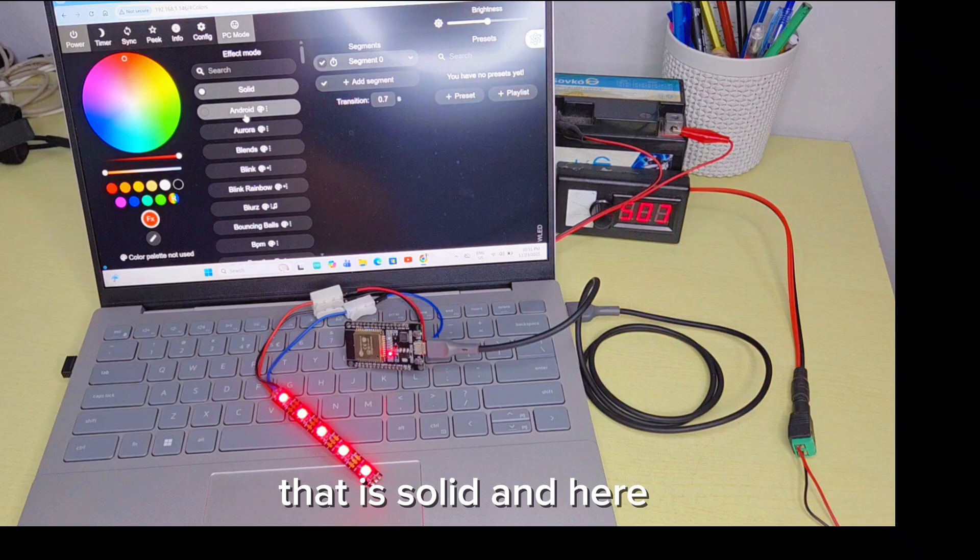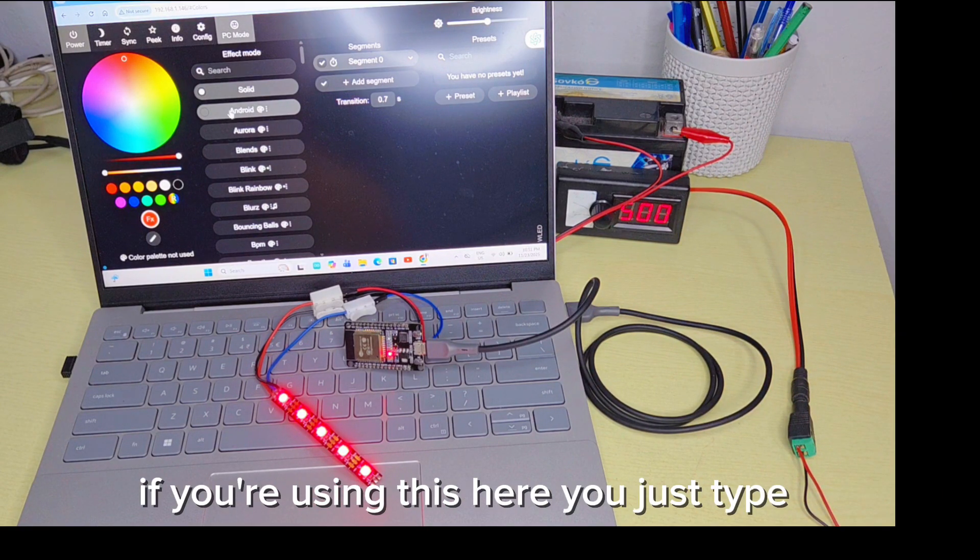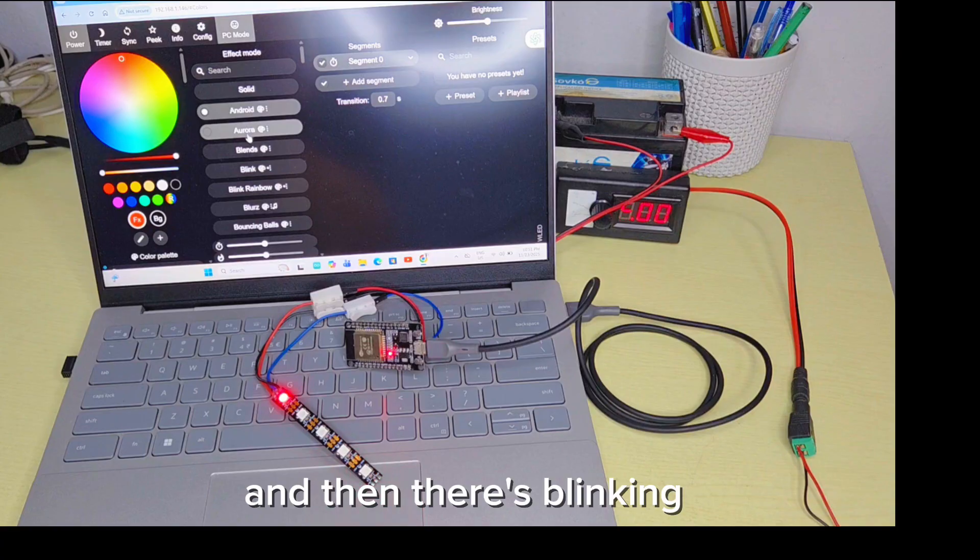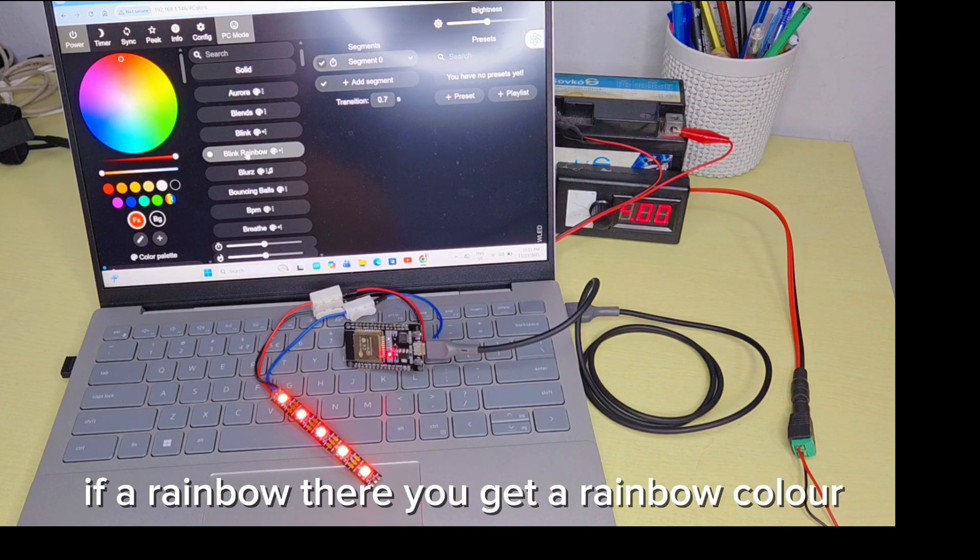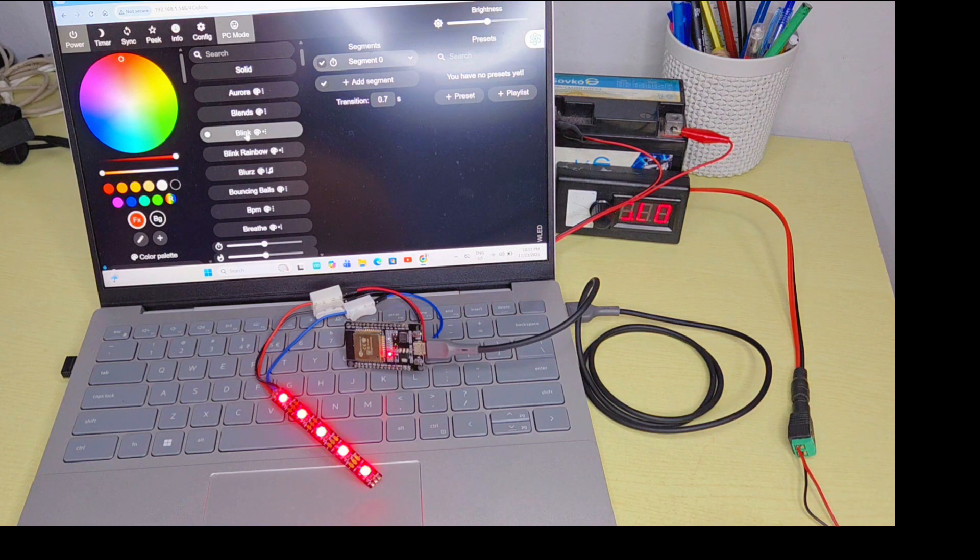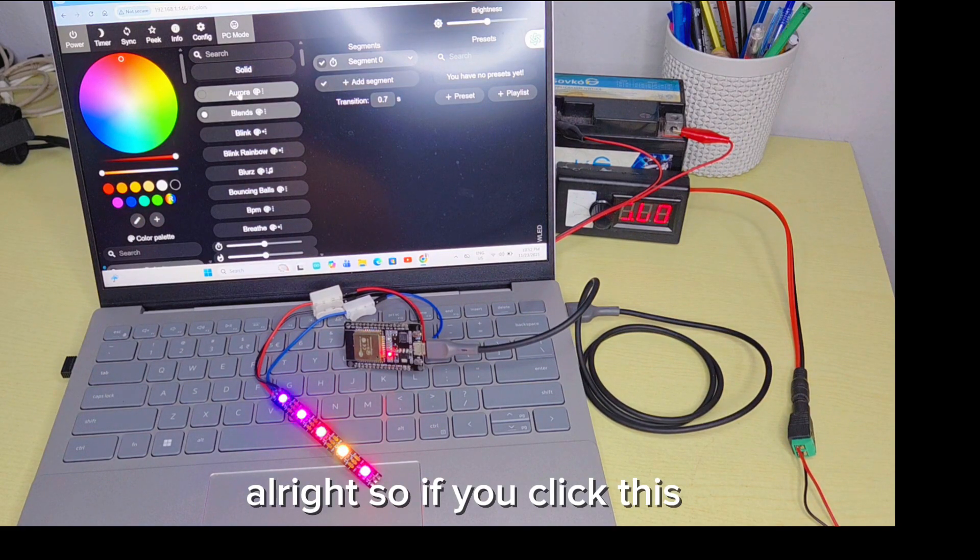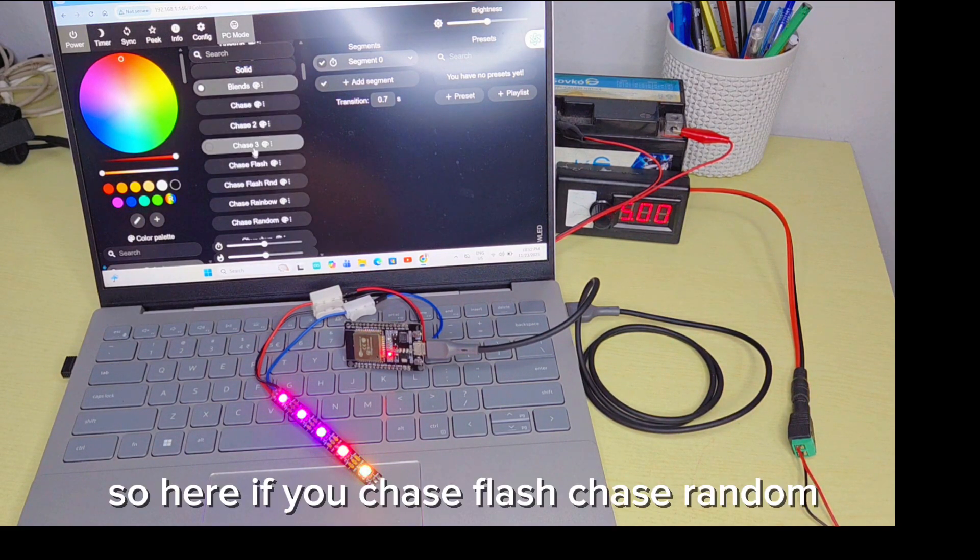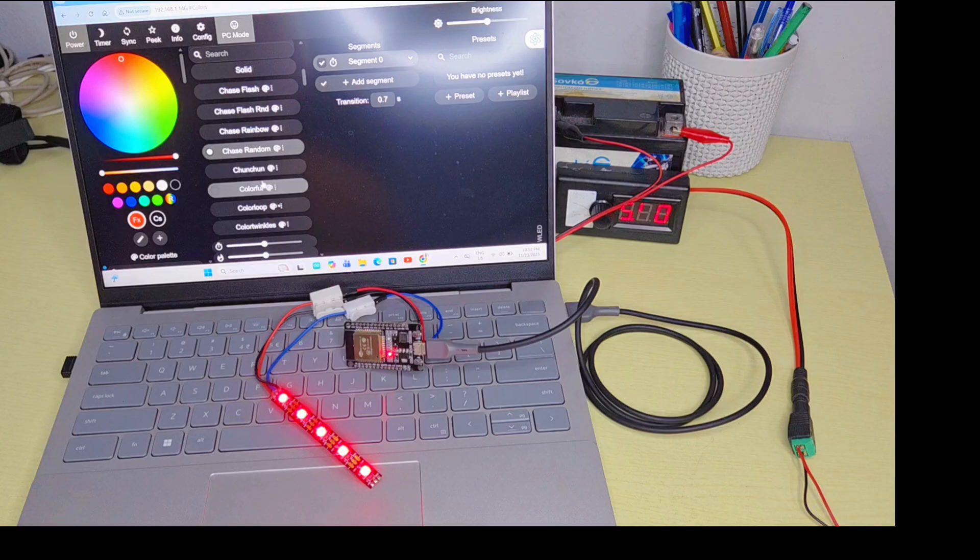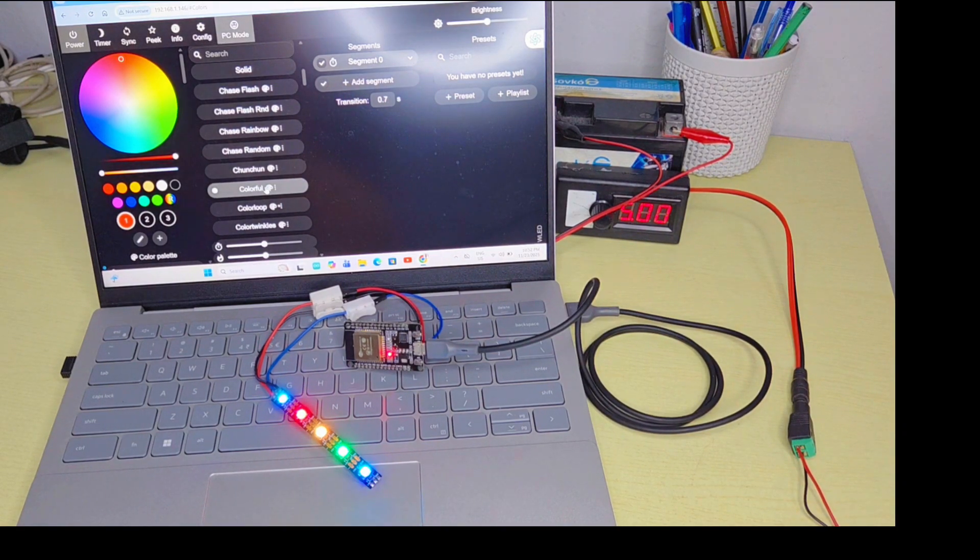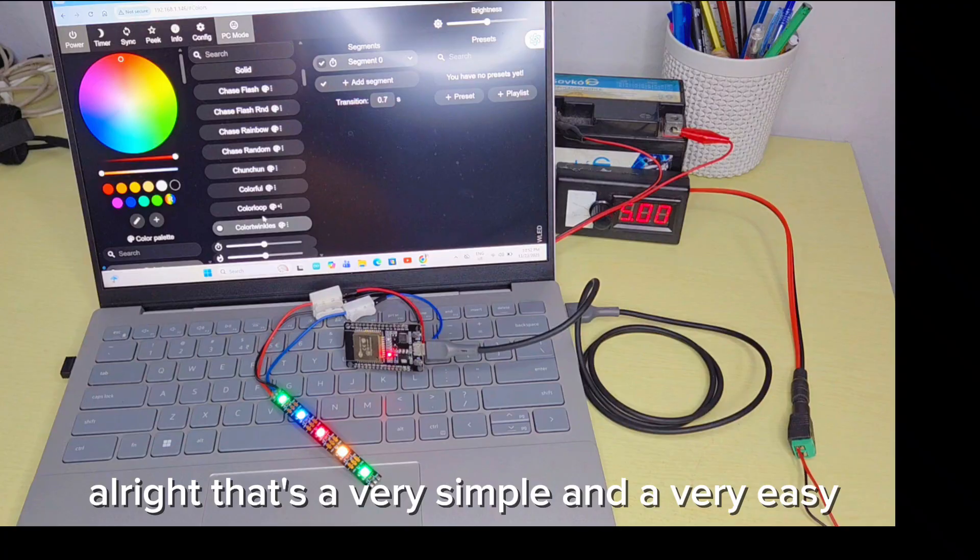That is solid. If you're using this here, there's blinking. If you scroll down, there's so many functions. If rainbow, then you get a rainbow color. You just click one time. If you chase, flush, chase random, colorful. That's very simple and very easy.